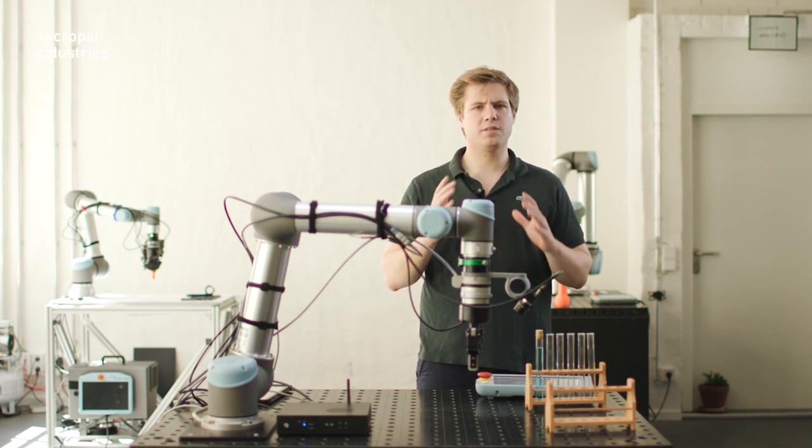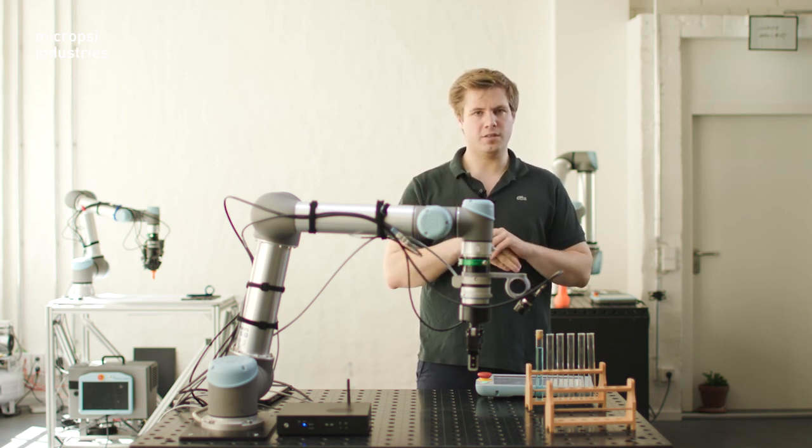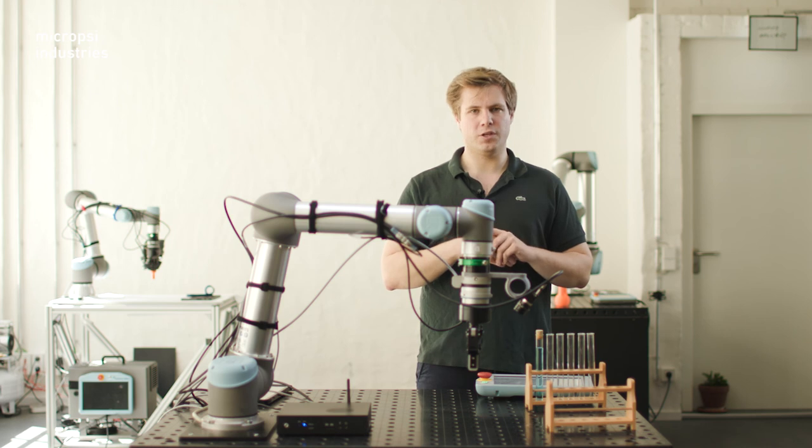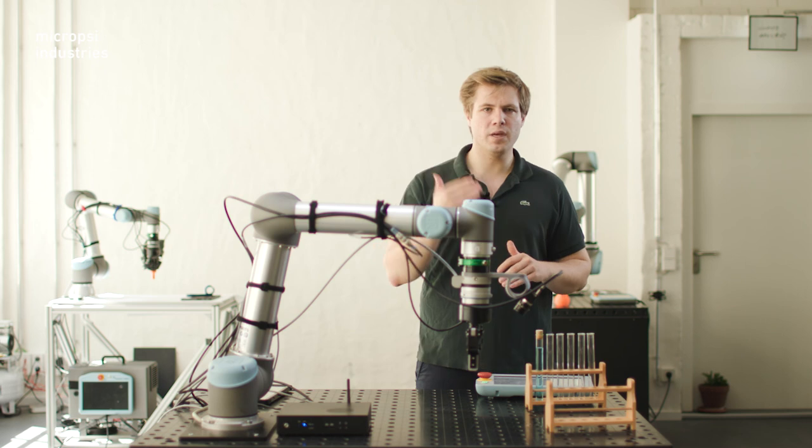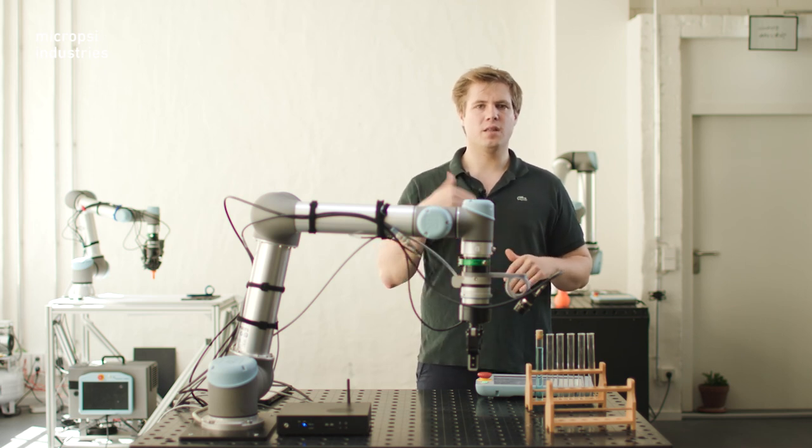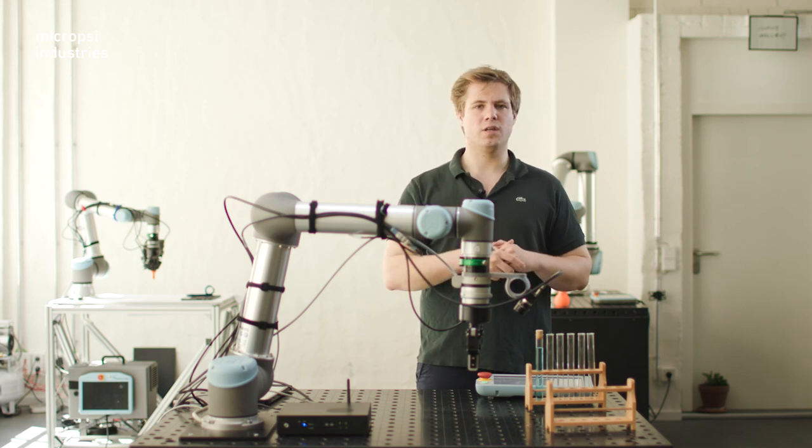All together, you have six degrees of freedom. Three translational and three rotational. You should assess how many degrees of freedom you need for your task. You want to minimize the degrees of freedom. The less degrees of freedom you use, the more efficient your task becomes.